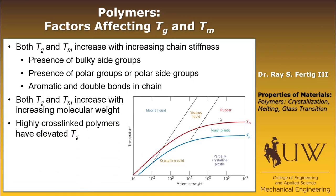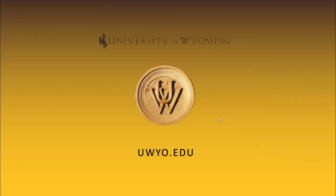One additional factor that only affects TG is that highly cross-linked polymers have an elevated TG compared to less cross-linked ones. Melting temperature is not affected because heavily cross-linked polymers can't be crystalline. In fact, you can sometimes get a qualitative measure of cross-linking by measuring TG for different polymer systems. So those are the highlights of these three phenomena: crystallization, melting, and glass transition.